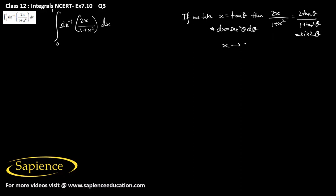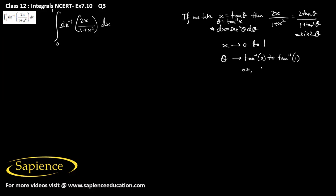When x goes from 0 to 1, then θ = tan⁻¹(x), so θ will go from tan⁻¹(0) to tan⁻¹(1), which means θ goes from 0 to π/4.